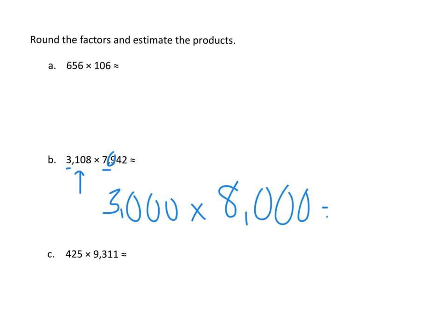So 3,000 times 8,000, I'm going to just do my little trick, underline my 3 and my 8. 3 times 8 is 24. And I have six zeros: 1, 2, 3, 4, 5, 6. My answer is 3,108 times 7,942 is about 24,000,000.